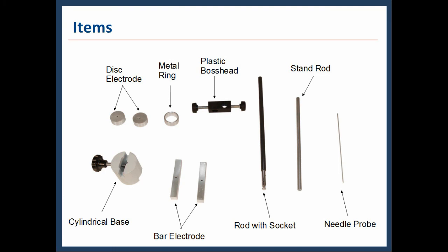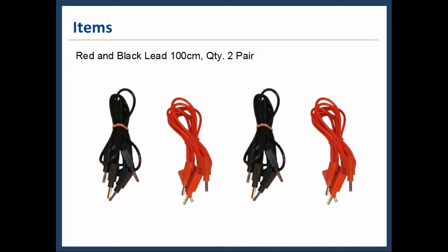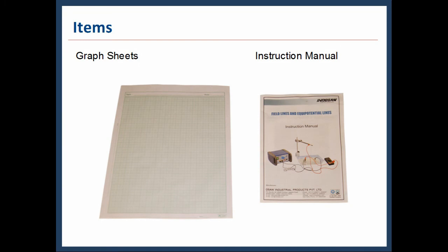One cylindrical base, one pair of bar electrodes, one rod with socket, one stand rod, and one needle probe. There will be two pairs of red and black leads of length 100 centimeter. Graph sheets and instruction manual are also provided.